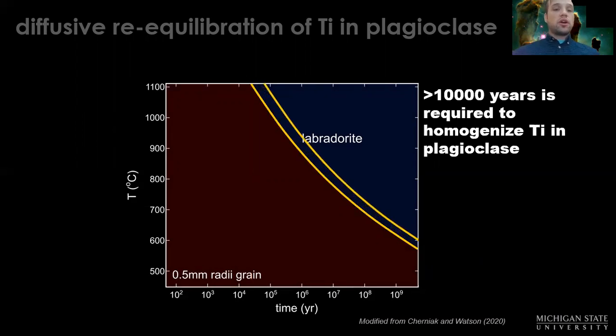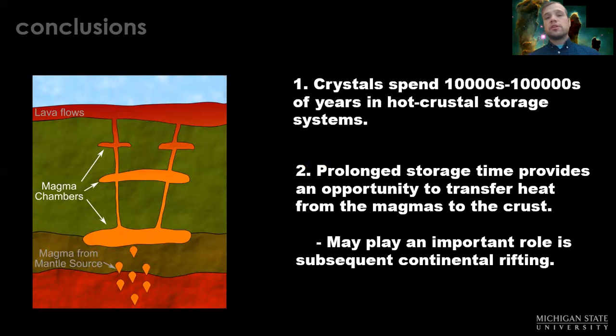Those crystals that are even larger than the millimeter scale plotted here require even longer, maybe up to 100,000 years. So in conclusion, the crystals we see must have spent tens to hundreds of thousands of years in hot crustal storage, and the important thing is that prolonged storage time provides an opportunity to transfer an enormous amount of heat to the crust.